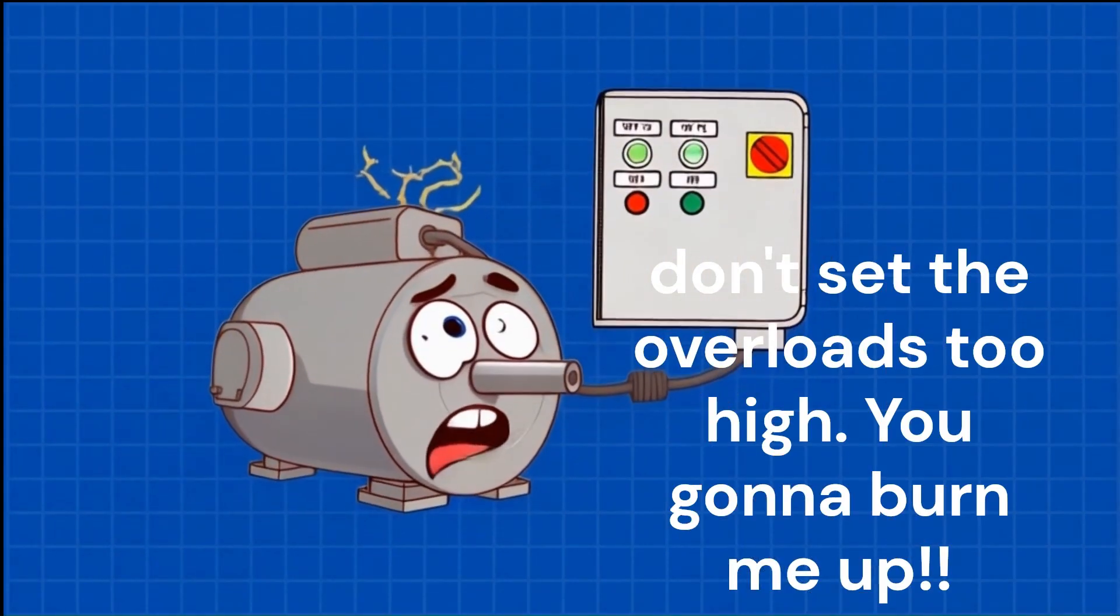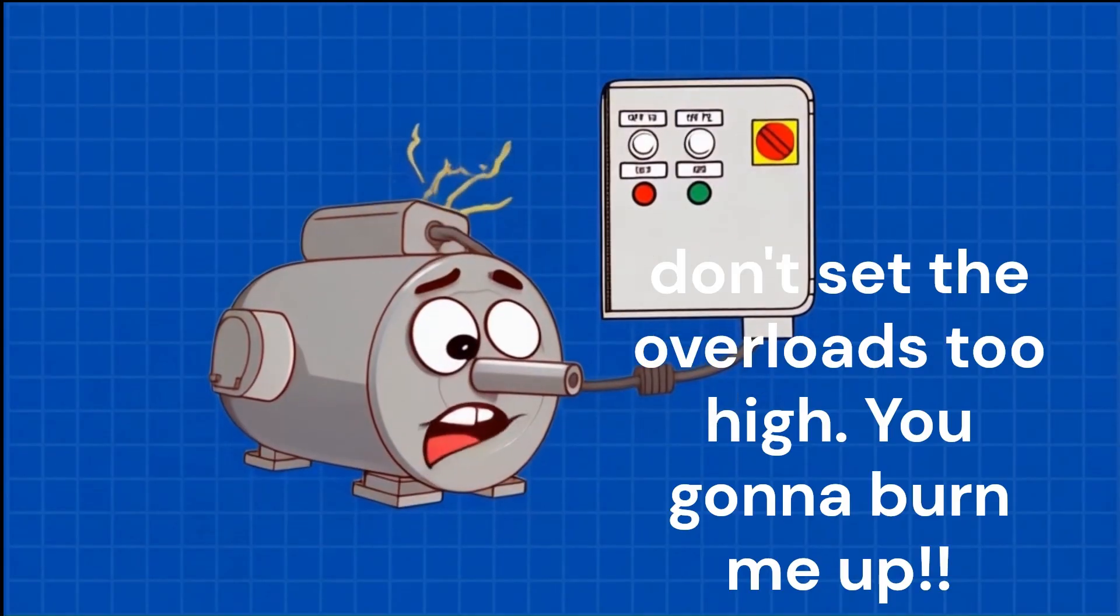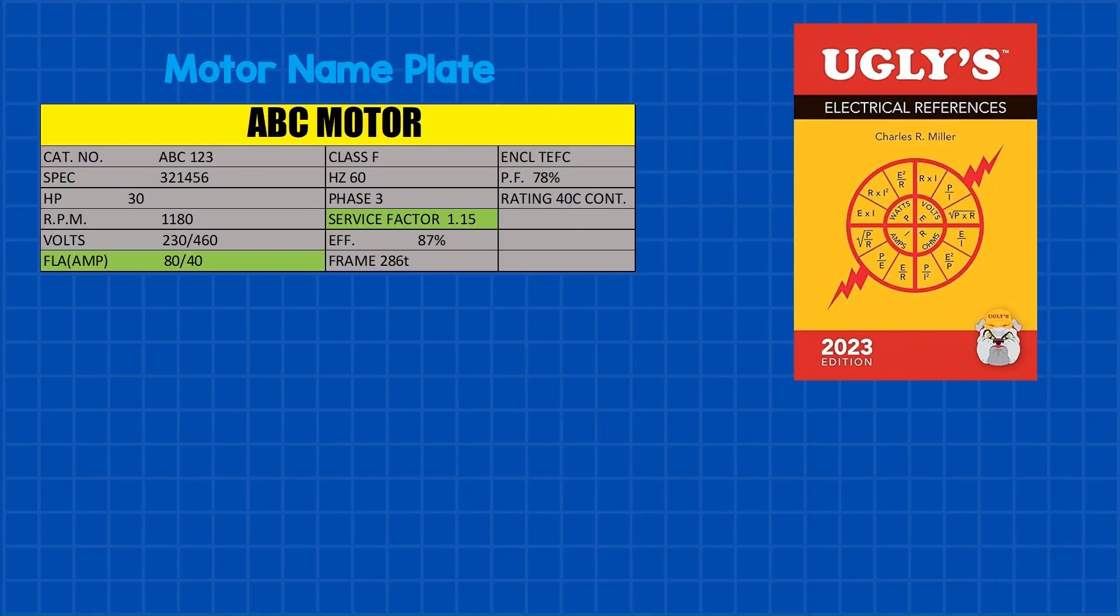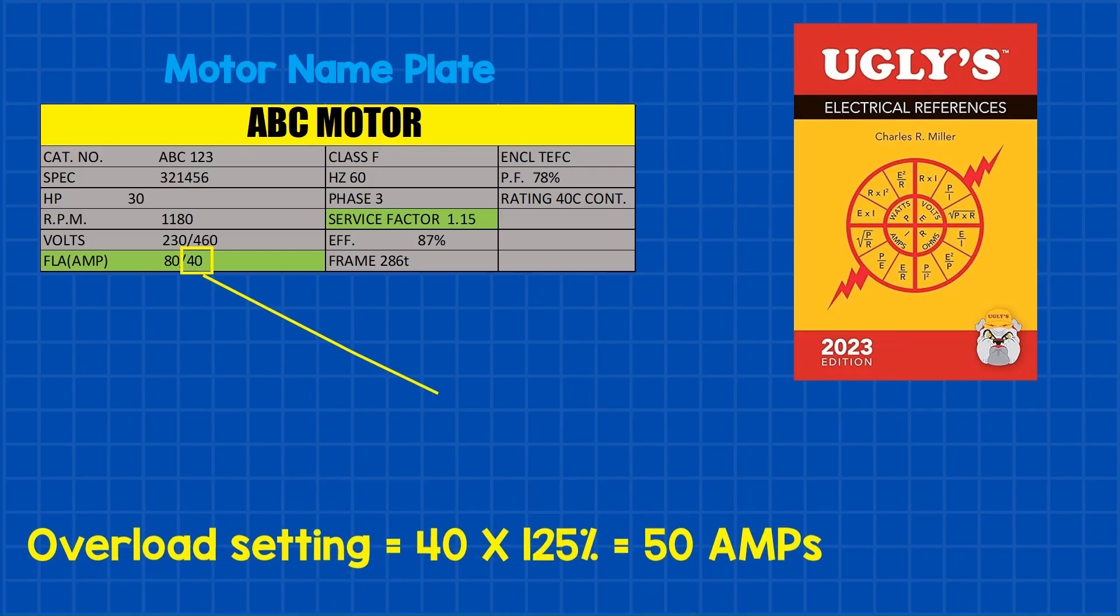The overload setting should never exceed 125% of the motor's full load current. For a 40 horsepower motor, this means the setting should be no higher than 50 amps.